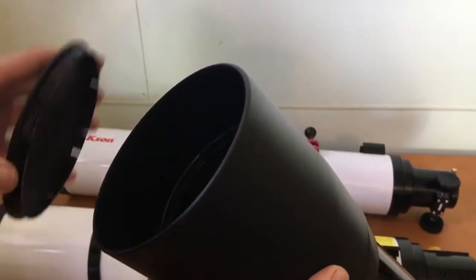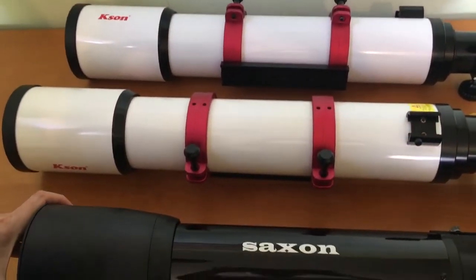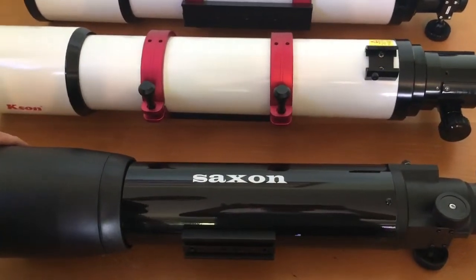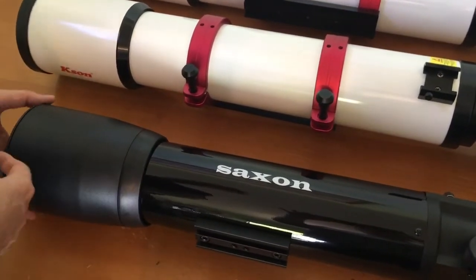So let's talk about the construction of it and how it is. It's very inexpensive. You can get this one here for $550 Australian including a lovely mount which is an Alt-Az up and down mount. And it works quite well. It is made to a budget a little bit.